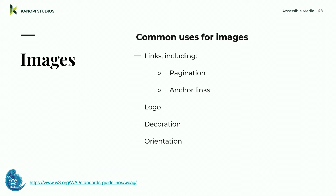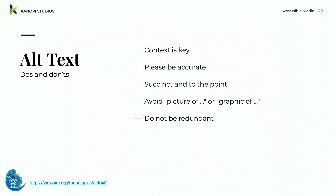Remember, images can serve as pagination, anchor links, logos, or decoration — they help with orientation. For alt text, context is super important. Be accurate and equivalent in presenting the content and function of the image. Be succinct — typically no more than a few words, though sometimes a short sentence or two. Don't use phrases like 'image of' or 'graphic of' — that's redundant, and screen readers may read 'image of image of.' Don't repeat information that's already in the surrounding text.